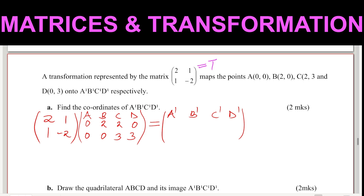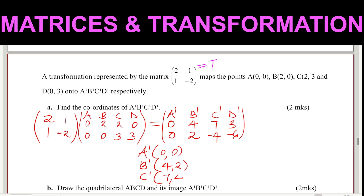When we multiply, we start with row 1, column 1: 2×0 + 1×0 = 0. First row, second column: 2×2 = 4. For C: 4+3 = 7. For D: 0+3 = 3. Then the second row: first column gives 0, second column gives 2. Third gives 2−6 = negative 4. For D: 0 − 6 = negative 6. So the coordinates are A'(0,0), B'(4,2), C'(7,−4), D'(3,−6).